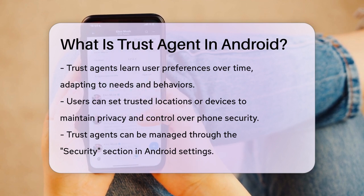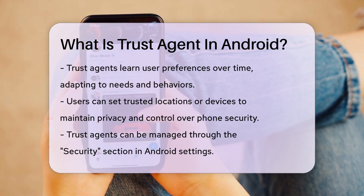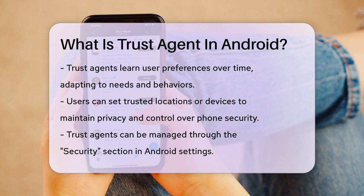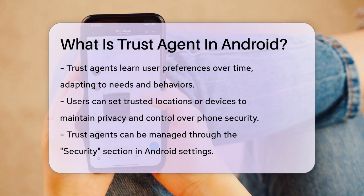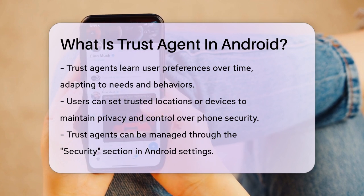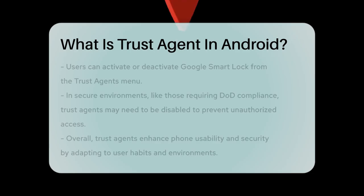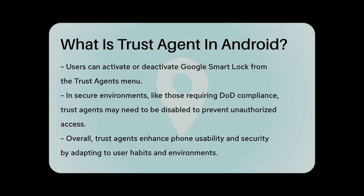To manage Trust Agents on your Android device, you can go to your phone's settings, scroll down to Security, and select either Trust Agents or Smart Lock. Here, you can confirm if the Google Smart Lock Trust Agent is active or turn it on if it's not. If you need to disable it, you can follow similar steps to turn it off.